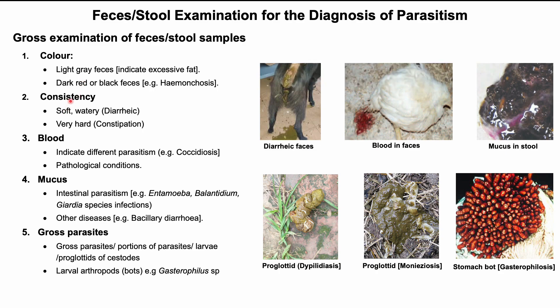Next, the fecal sample is checked for consistency. Soft, watery feces indicates diarrhea, and very hard feces is the indication of constipation. In many pathological conditions as well as in different parasitic infections, blood in the feces can be found. For example, fresh blood can be found if there is injury in the rectum, or in coccidiosis caused by Eimeria adenoeides and Eimeria gallopavonis infection in turkey.